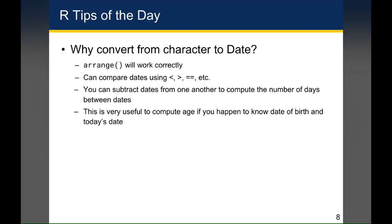There are a couple of reasons you definitely want to convert character variables into date variables. The first is that arrange will work correctly when you arrange by date — so if you want to know what the earliest or latest date was, you can arrange on the date variable and the dates will be sorted correctly. You can also compare dates using less than, greater than, or equals equals, so if you want to see if two things happened on the same day or different days, you'll be able to do that correctly as long as the date is coded as a date.